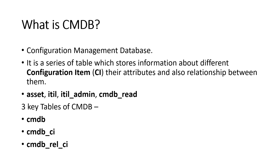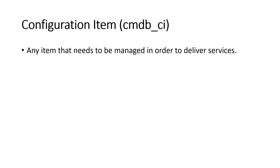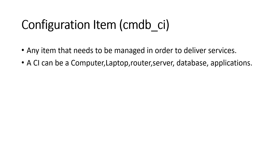A configuration item (CI) is any item that needs to be managed in order to deliver a service — items responsible for delivering service. A CI can be a computer, laptop, router, server, database, or application.